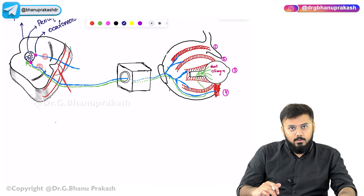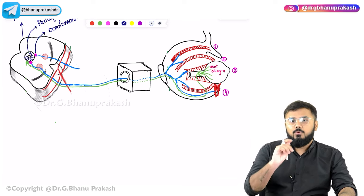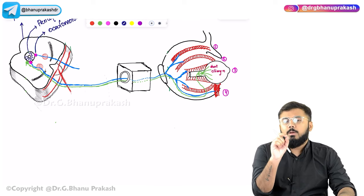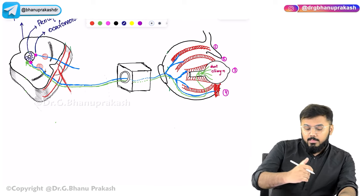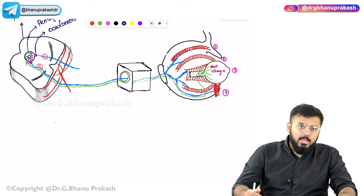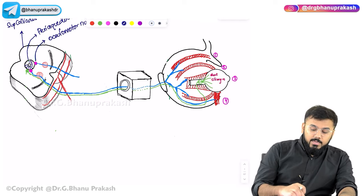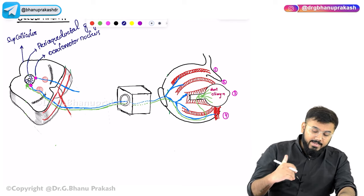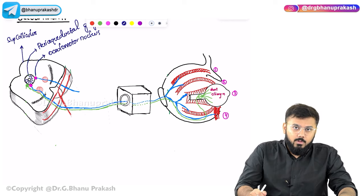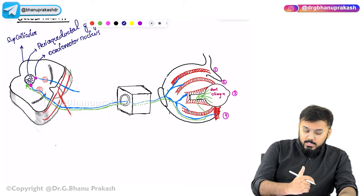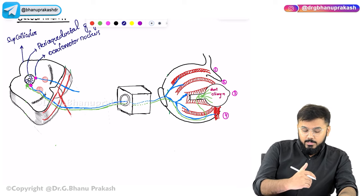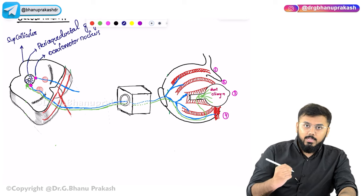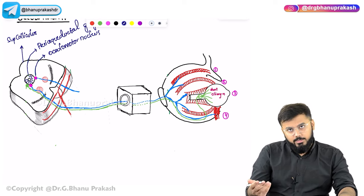The oculomotor nerve is coming from the ventral side of the periaqueductal gray matter. The nucleus is located ventral to the periaqueductal gray matter. Once the fibers exit the oculomotor nucleus, they cross the red nucleus — also called nucleus ruber — from which the rubrospinal tract originates.